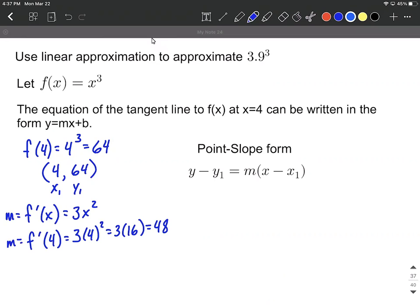So over to our formula what we need to do is we're going to plug in our x1, our y1, and our m. So we can say y minus 64 equals 48 times x minus our x value of 4.